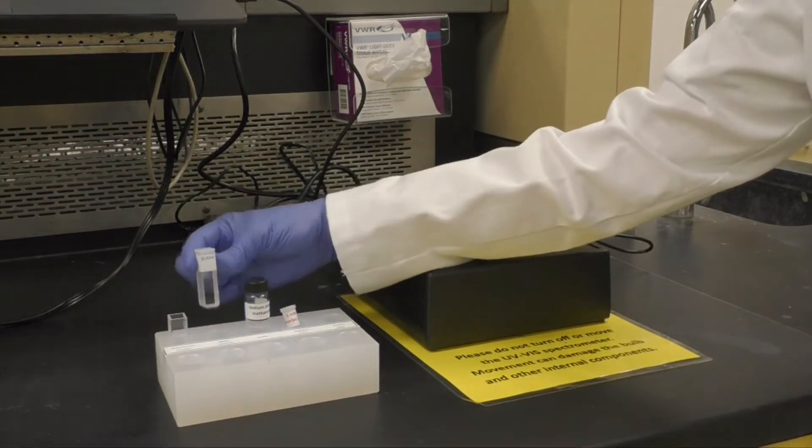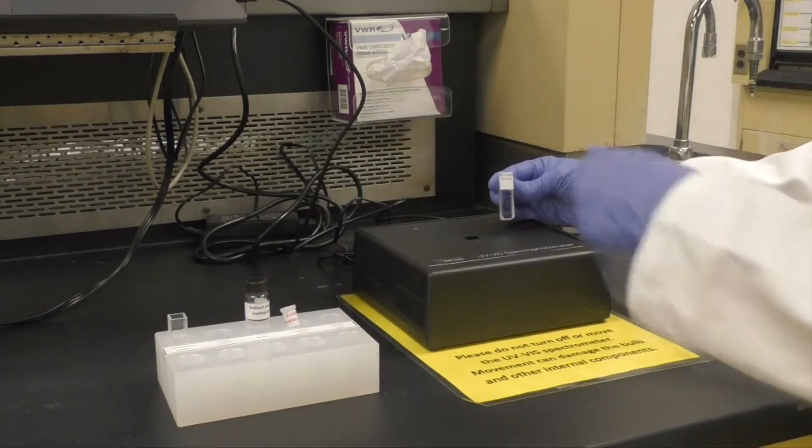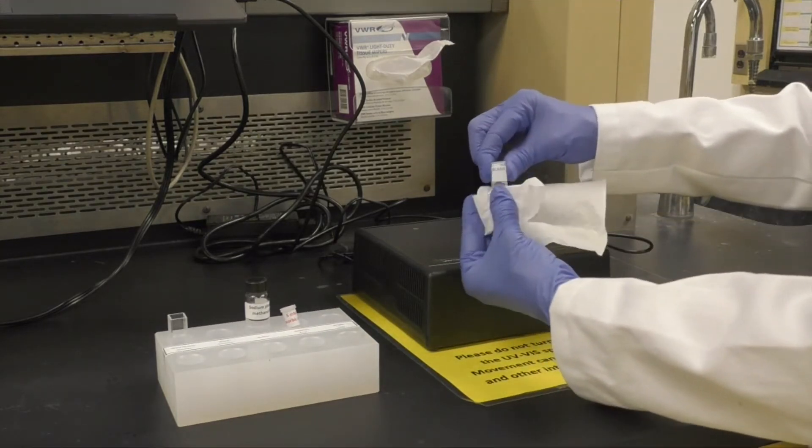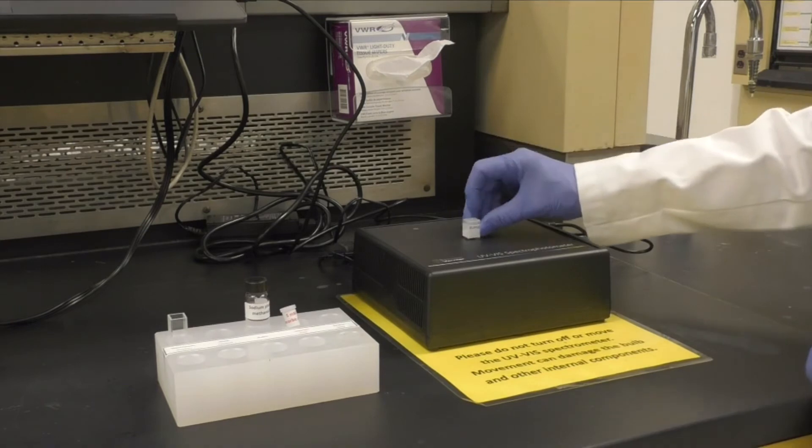To calibrate the spectrometer, use the prepared blank cuvette. Wipe it with a kimwipe and place it in the spectrometer with one of the clear sides facing the front of the instrument.